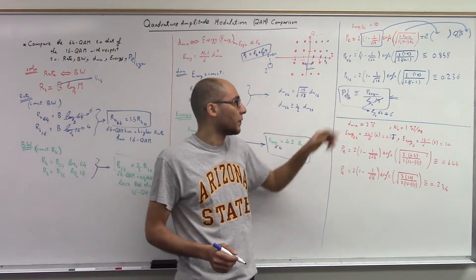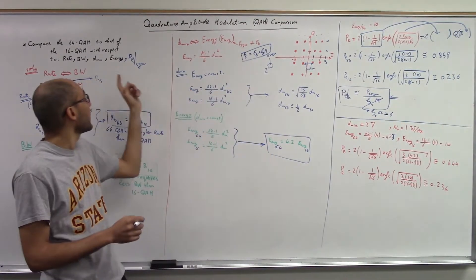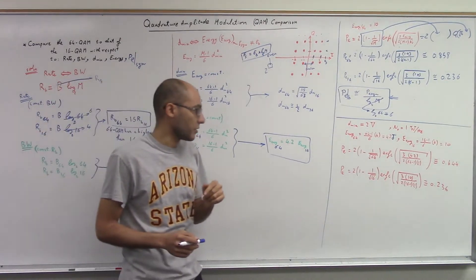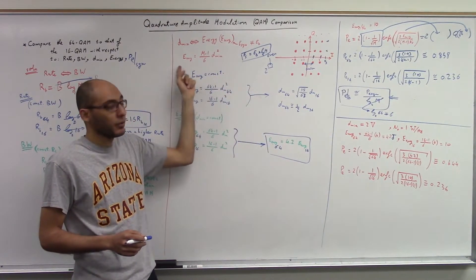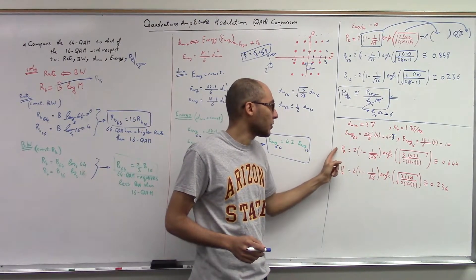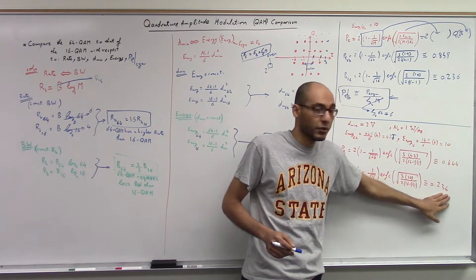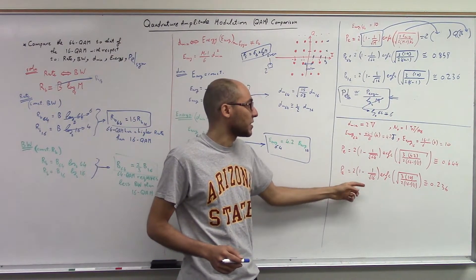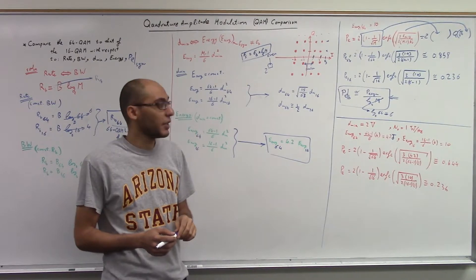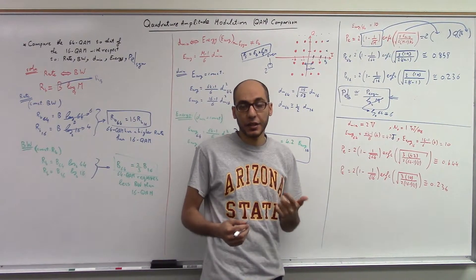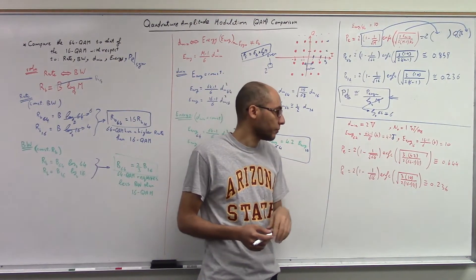This is of course a rough estimate, not exact. If asked to compare probability of error given that d minimum is fixed to a constant, you first calculate the average energy using the energy formula, then substitute into the probability of error equation. This yields results like 44% error for 64-QAM and 23% error for 16-QAM. Note the hidden assumption that the receive antenna has a resistance of one ohm, which is why the energy result comes out in joules.